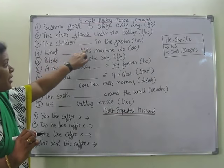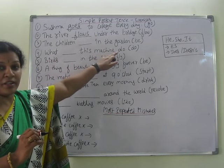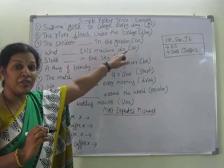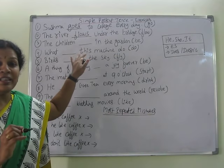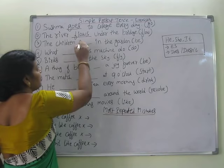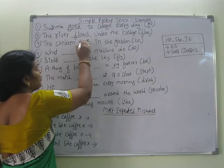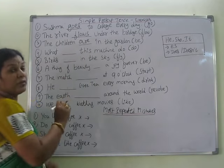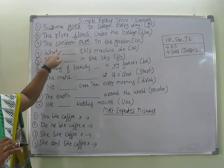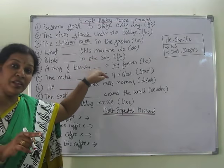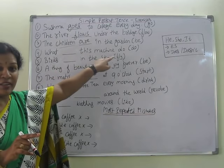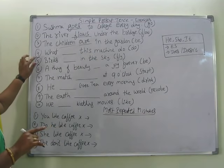The children ___ in the garden. 'Be' is given. We say: The children are in the garden. Children is plural — if it is plural, we say 'are'; if it is singular, we say 'is'. So: children are in the garden.